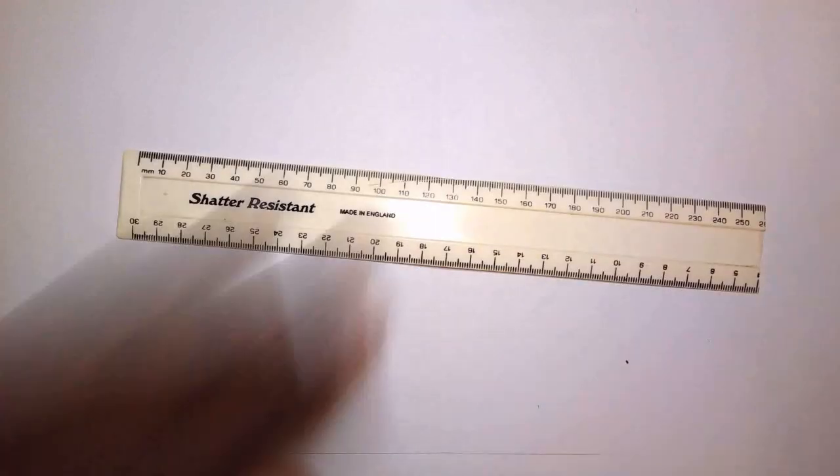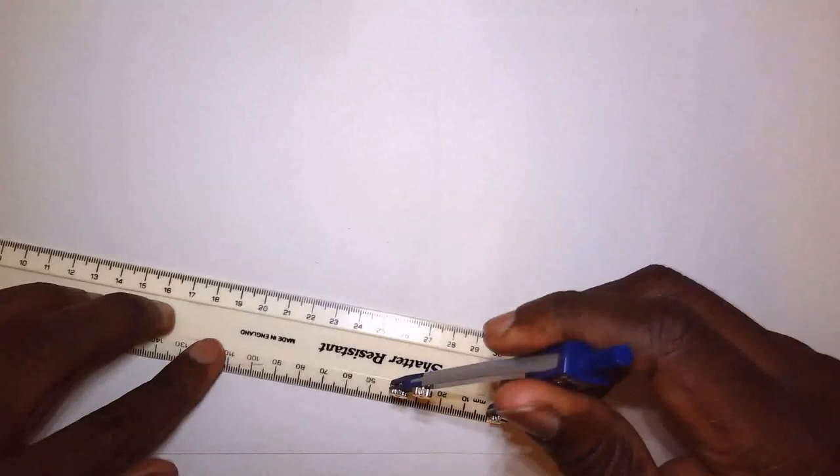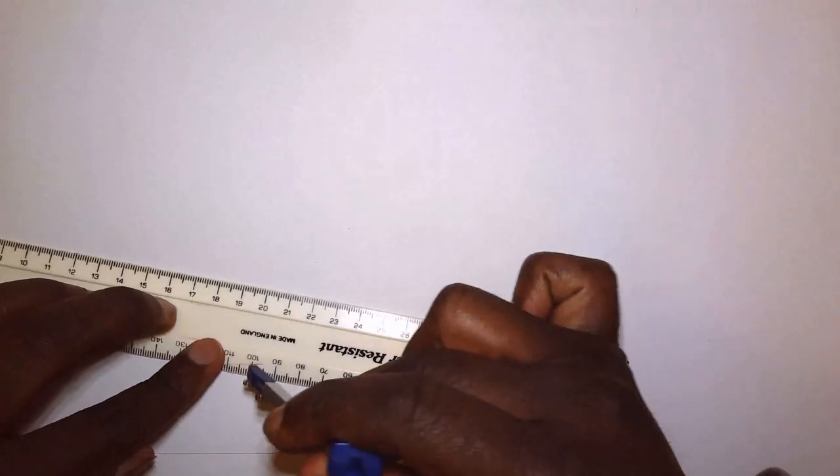Hi folks, so now that we've gone through exercise 4, let's have a stab at exercise 5, whereby we are being challenged to construct an isosceles triangle. We'll be giving some information regarding the base. So I'm just going to proceed by drawing a ray, get our pair of compasses and we'll be given the base to measure 100mm, similar to the triangle in exercise 4.